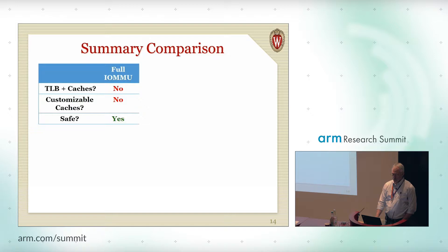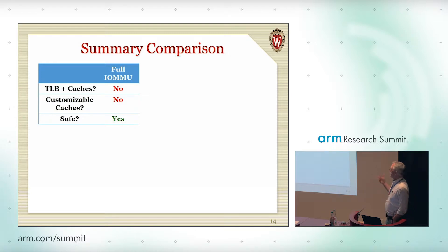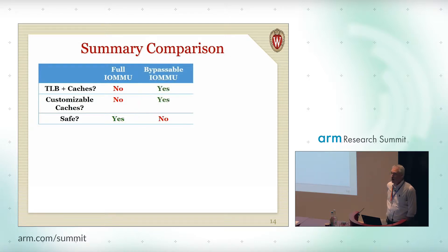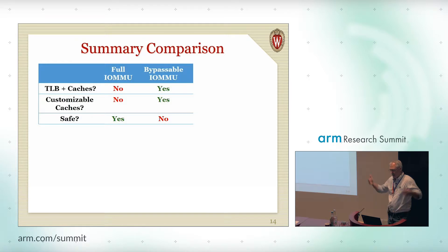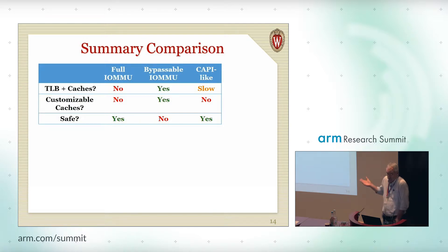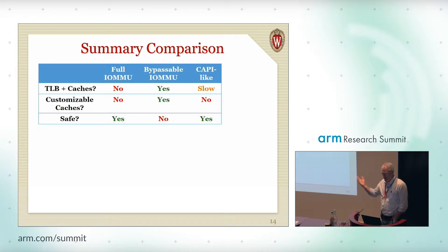If we compare these various schemes, we can ask three questions: Does it support having TLBs and caches? Can those caches be customized? And is it safe? The full IOMMU solution doesn't allow caches, therefore they can't be customized, but it's safe — good, but slow. The bypassable IOMMU allows you to have TLBs and caches, and you can customize them to your heart's delight. But of course it's not safe. The CAPI-like system says you can have TLBs and caches, but you can't customize them, so they're possibly overkill for a particular accelerator — but it is safe. What we'd like to do is answer yes to all of these questions. That's the goal of border control.